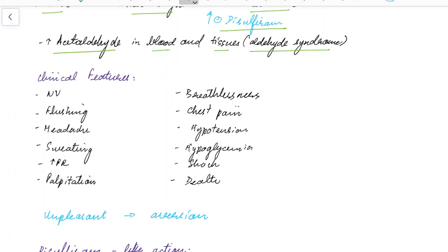The clinical features include nausea and vomiting, flushing, headache, sweating, tachycardia, palpitations, breathlessness, chest pain, hypotension, hypoglycemia, and in severe cases, shock and death. Since these features are very unpleasant, the person tends to develop an aversion towards alcohol.